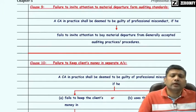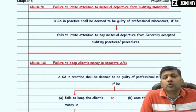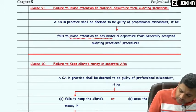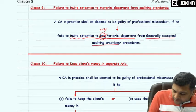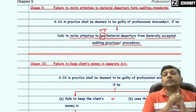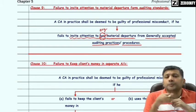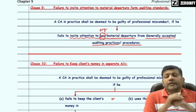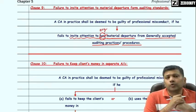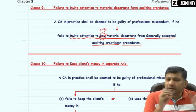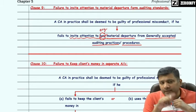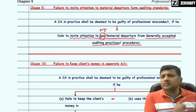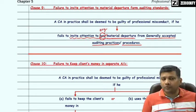Clause 9 states that a practicing CA shall be deemed to be guilty of professional misconduct if he fails to invite attention to any material departure from generally accepted auditing practices or procedures. Every chartered accountant is supposed to comply with auditing standards and general auditing practices. If he deviates from any requirement, he is required to disclose that deviation, make a statement in his reports about deviations taken and alternate procedures performed. If a practicing CA fails to invite attention of the user about such deviation, he will be deemed guilty under Clause 9, Part 1 of Second Schedule.